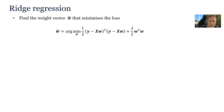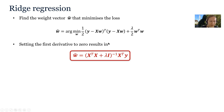To find a solution to ridge regression we again need to find vector w-hat that minimizes the loss function. If we set the first derivative of the loss function with respect to w to zero, we obtain an analytical solution to the ridge regression problem that is given here.